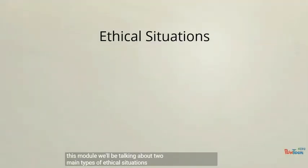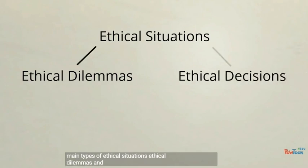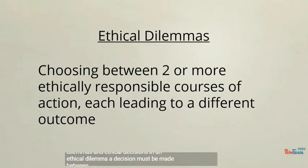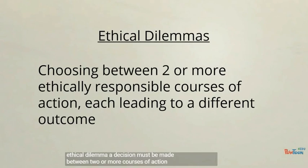In this module, we'll be talking about two main types of ethical situations: ethical dilemmas and ethical decisions. In an ethical dilemma, a decision must be made between two or more courses of action, all of which being considered ethically appropriate, but each of which would lead to different outcomes.